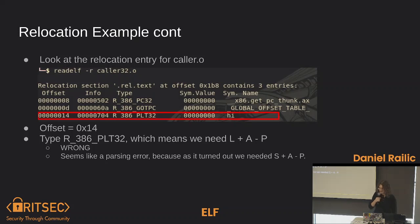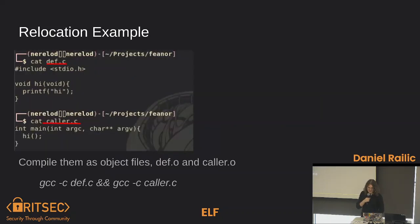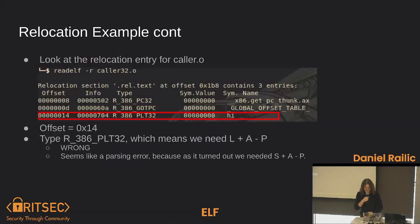I did this math for many hours and looked at the PLT table, but there wasn't an entry for the hi function — because why would there be? It's statically linked. So I had to use some basic algebra to find what value I actually needed to get the offset that ended up being computed. It turned out it wasn't the L value — it was actually the S value. So the actual formula I needed was S+A-P. I don't know if read ELF just got confused or what the deal was.